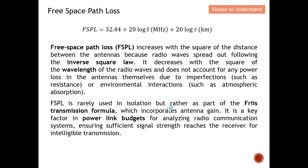Free space path loss is rarely used in isolation, but rather as part of the Friis transmission formula, which incorporates antenna gain. It is a key factor in the power link budget for analyzing radio communication systems and ensuring sufficient signal strength reaches the receiver. Once we calculate the anticipated loss between transmitter and receiver, we can determine whether the signal can be received — and if not, consider increasing transmit power or antenna gain.